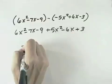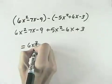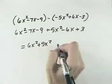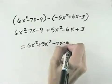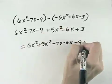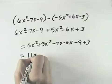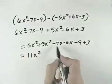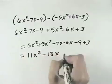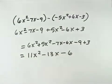Now we need to remember to combine like terms. We can combine the 6x squared and the 5x squared together. We can take the minus 7x and the minus 6x to combine those two, and the minus 9 plus 3. That gives us 11x squared. Minus 7 minus 6 will be minus 13x. And then negative 9 and positive 3 will be minus 6.